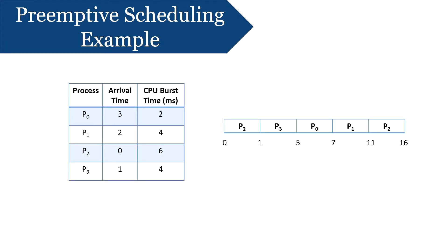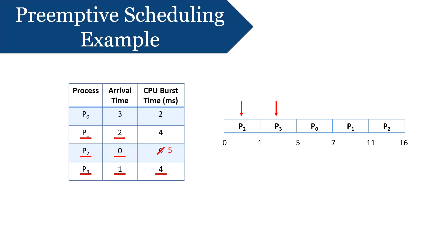Let us discuss primitive scheduling with an example of shortest remaining job first. We have four processes: P0, P1, P2, and P3. Process P2 arrives at time zero, so CPU is allocated to P2 as there is no other process in the ready queue. Meanwhile, as P2 is executing, P3 arrives at time one. The remaining time for P2 is five milliseconds, which is larger than the time required by P3, which is four milliseconds, so CPU is allocated to P3.